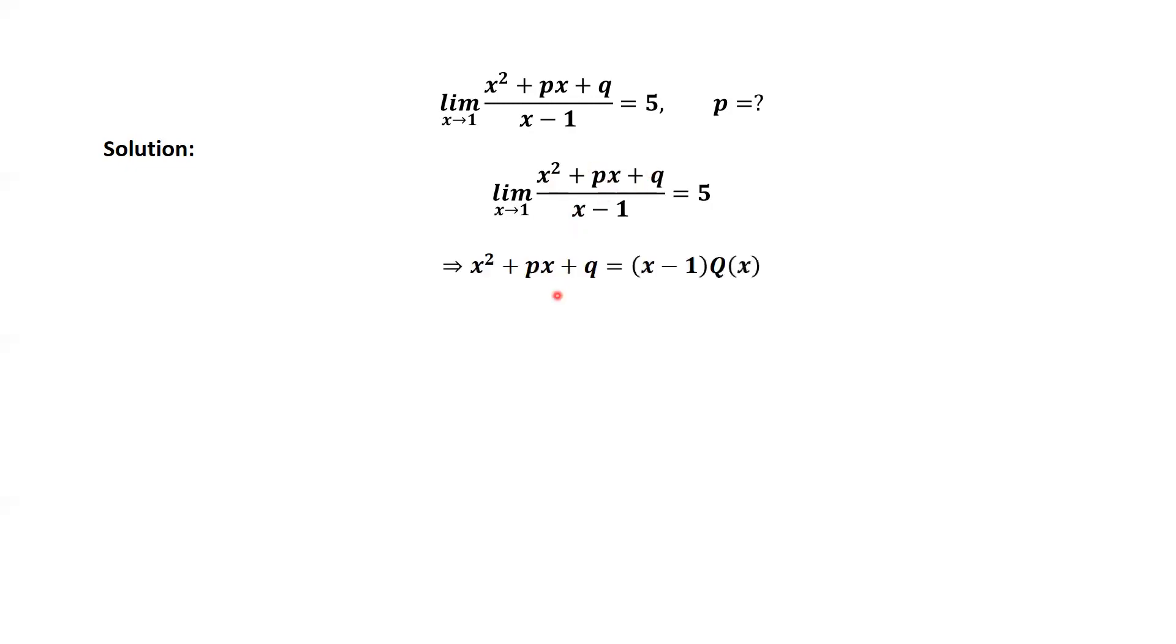This means x squared plus px plus q equals x minus 1 times Q(x), for some Q(x).